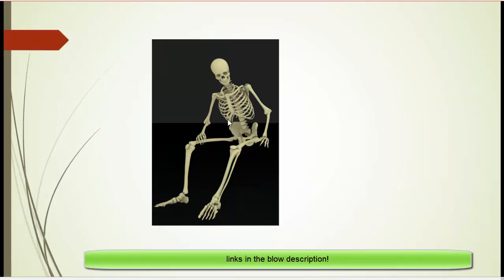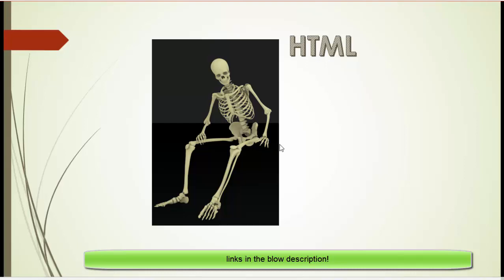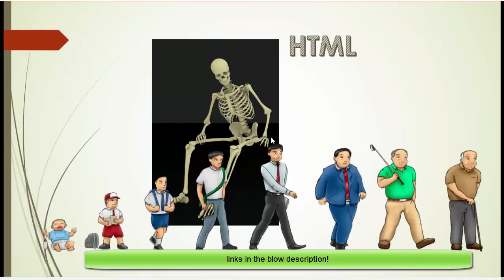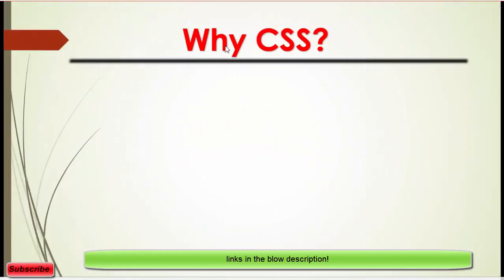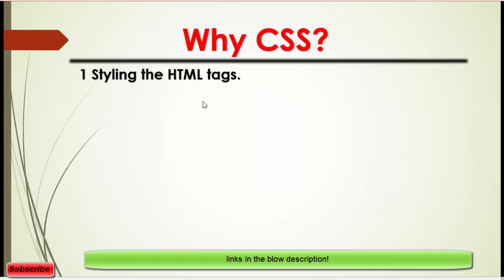Suppose this is a human body and it looks awful — it's not beautiful. Even though it is a body, it is just a skeleton. Consider it an HTML page. Now I want to make it beautiful, attractive, and eye-catching to our users, so I will use CSS — something like this.